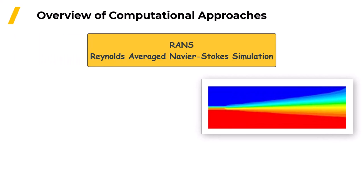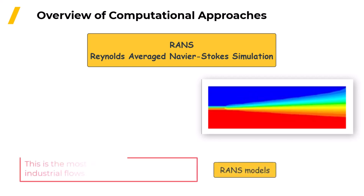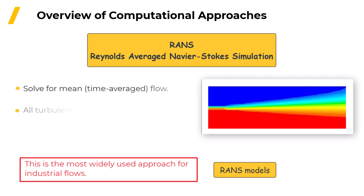That brings us to the most widely used modeling approach, which is known as the Reynolds average Navier-Stokes approach or more simply RANS. Models based on this approach are called RANS models and they are far and away the most widely used turbulence models. With RANS modeling, no turbulence is resolved in the simulation.